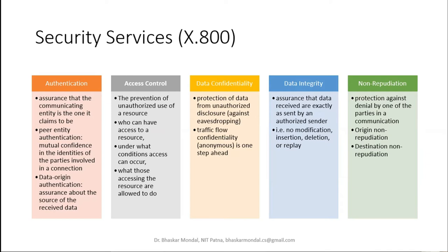Access control also defines under what conditions access can occur. For instance, a server room — physically, somebody needs to access that room, but under what legitimate condition? Or say someone needs to reinstall the database or take a backup. Who is doing it and in what situation can all be defined by access control, as well as what those accessing the resources are allowed to do after receiving permission.